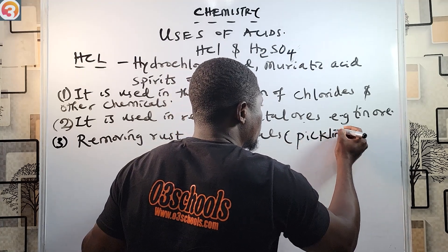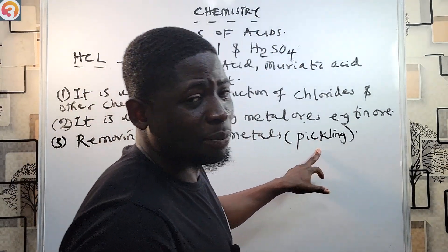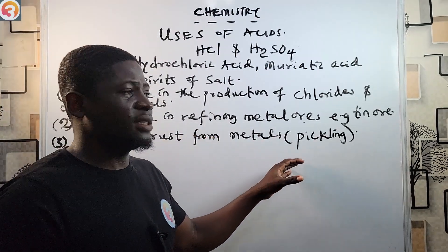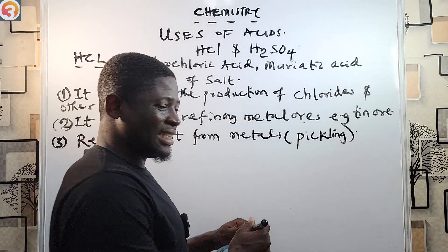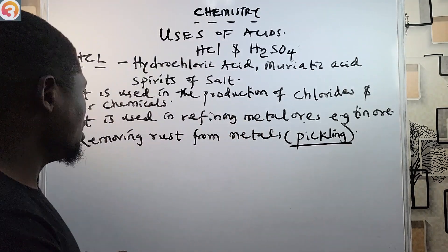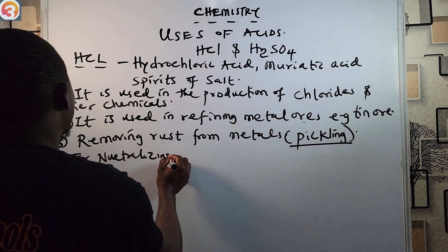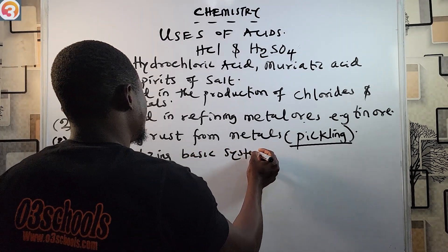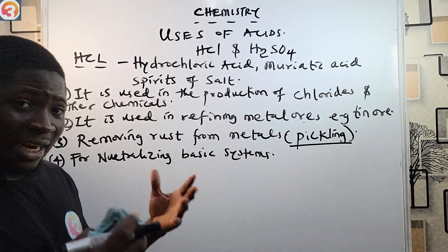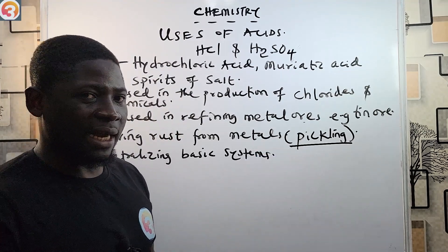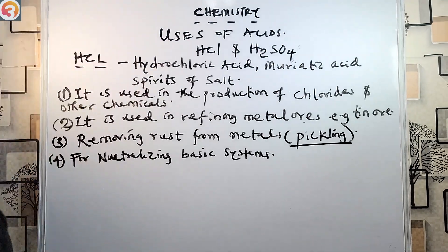This process of removing rust from metals using hydrochloric acid is called pickling — P-I-C-K-L-I-N-G. Pickling is the process of removing rust from metals, and it is a typical exam question, so please know it. Number four: HCl is used for neutralizing basic systems. Neutralization is a reaction between an acid and a base to form salt and water.